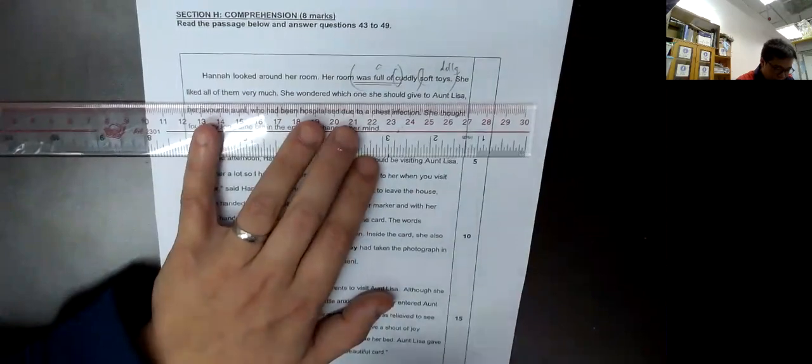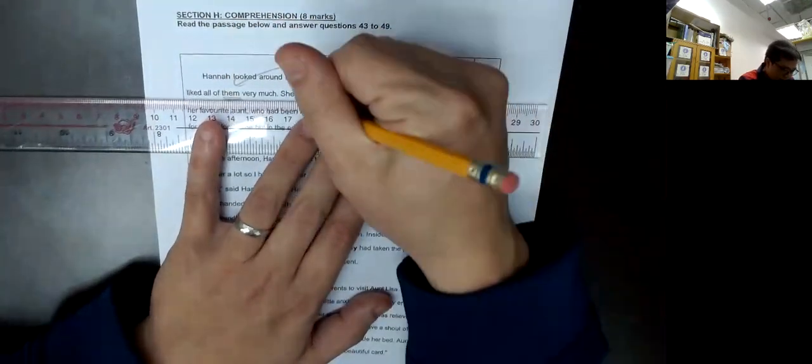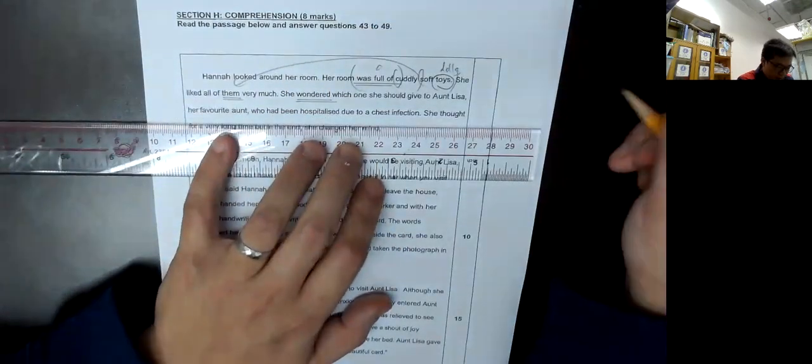She liked all of them very much. 怎麼用 them? 因為 toys 中數, object, 怎麼用 them? She wonder, wonder 即是想.